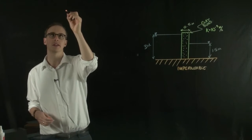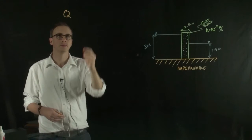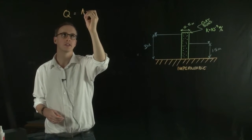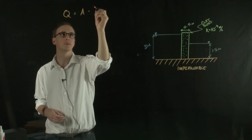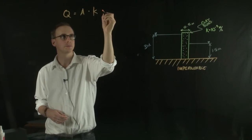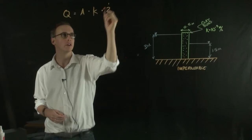So Darcy's law is looking at the flow, and that's equal to the cross-sectional area of flow multiplied by the permeability multiplied by the hydraulic gradient.